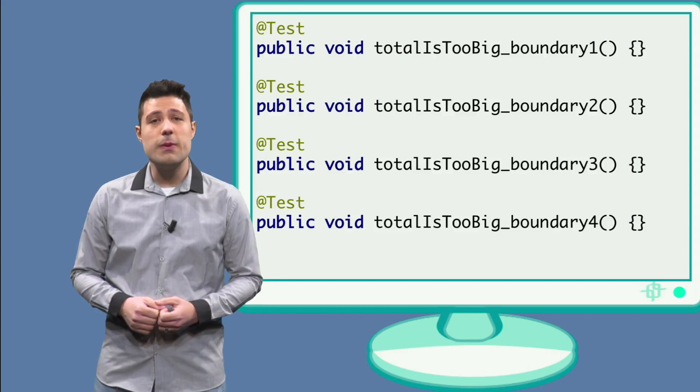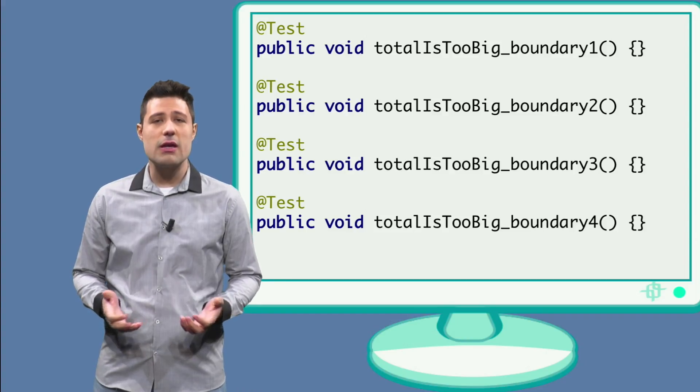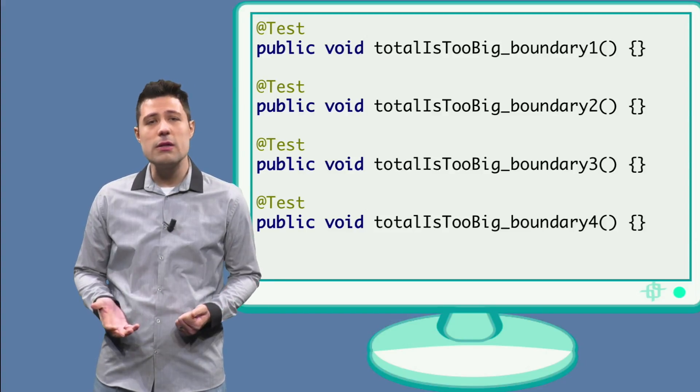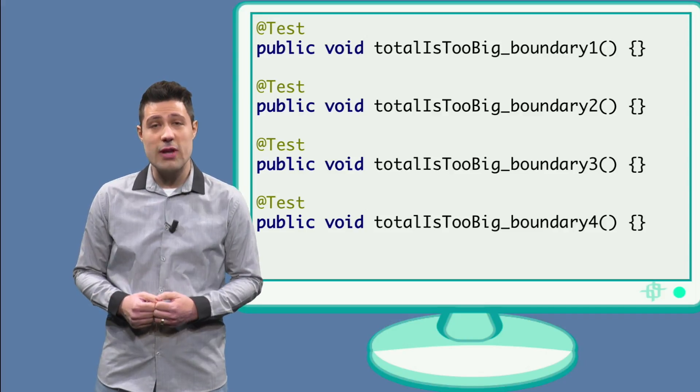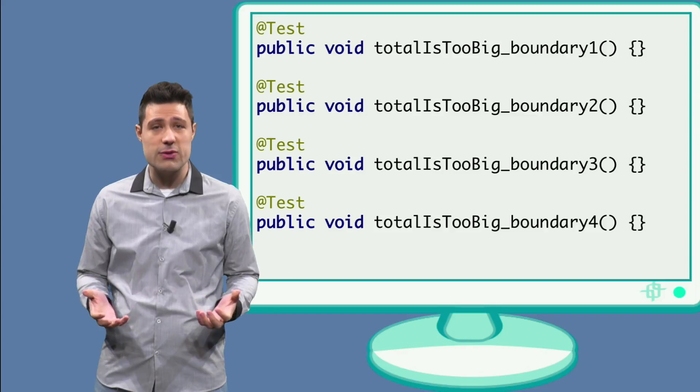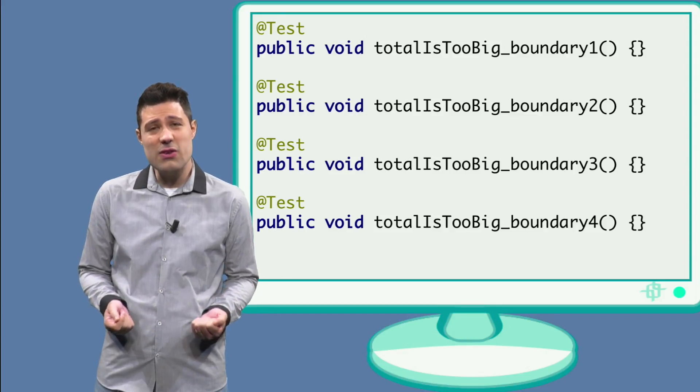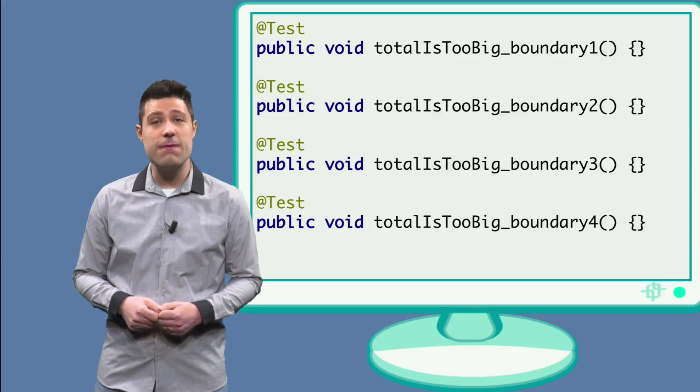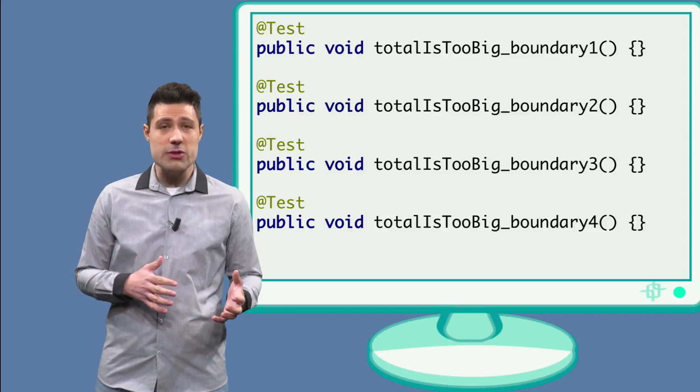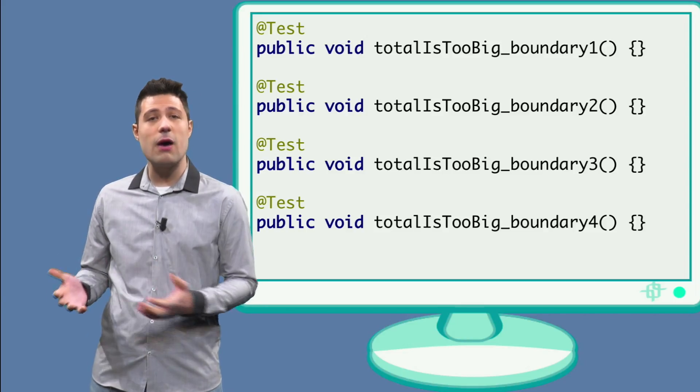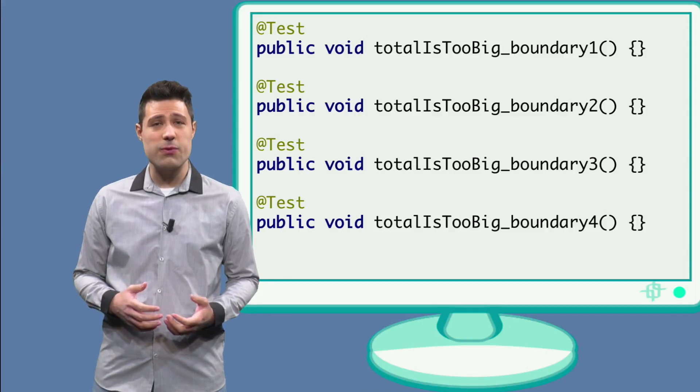One option would be to create more than one test for the same partition. Something like total is too big, 1, 2, 3, etc. However, as you can imagine, the number of tests could grow too fast and then become hard to maintain. And in terms of code, these tests would be very similar. The only thing that would change is the inputs and then the expected outputs. Thus, instead of writing one test method for each of these inputs, we will use what JUnit calls a parameterized test.